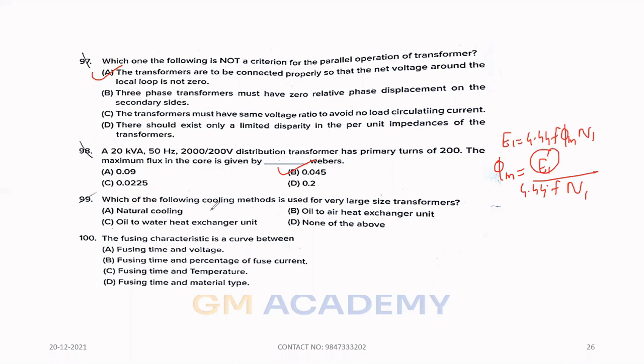Ninety-nine. Which of the following cooling method is used for very large size transformer in generating station? Option C, Oil to water heat exchanger unit. One hundred. The fusing characteristics is a curve between. Option B, Fusing time and percentage of rated current.